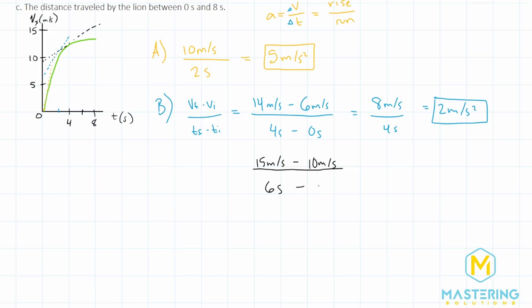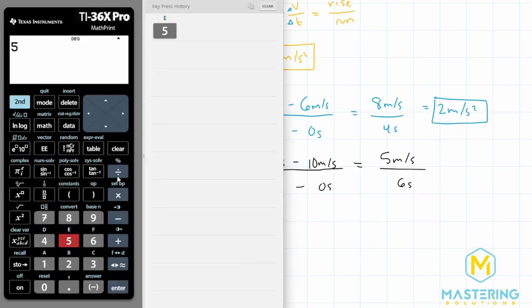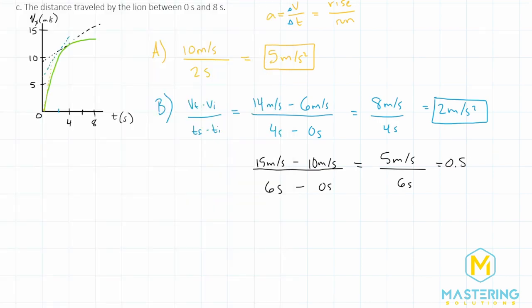And then it will be subtracting the initial time, which is zero again, zero seconds. So we have five meters per second divided by six seconds. And then if we plug that in, we have five sixths is the same as 0.8. So 0.8 meters per second squared. So the lion's acceleration is slowing down as it's attacking the prey.